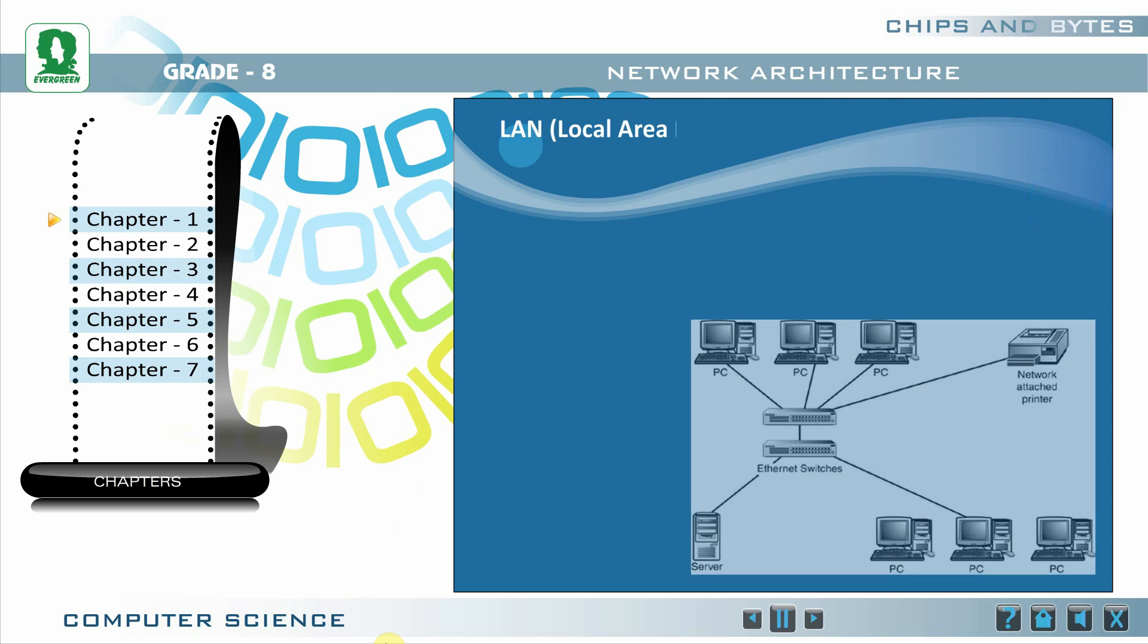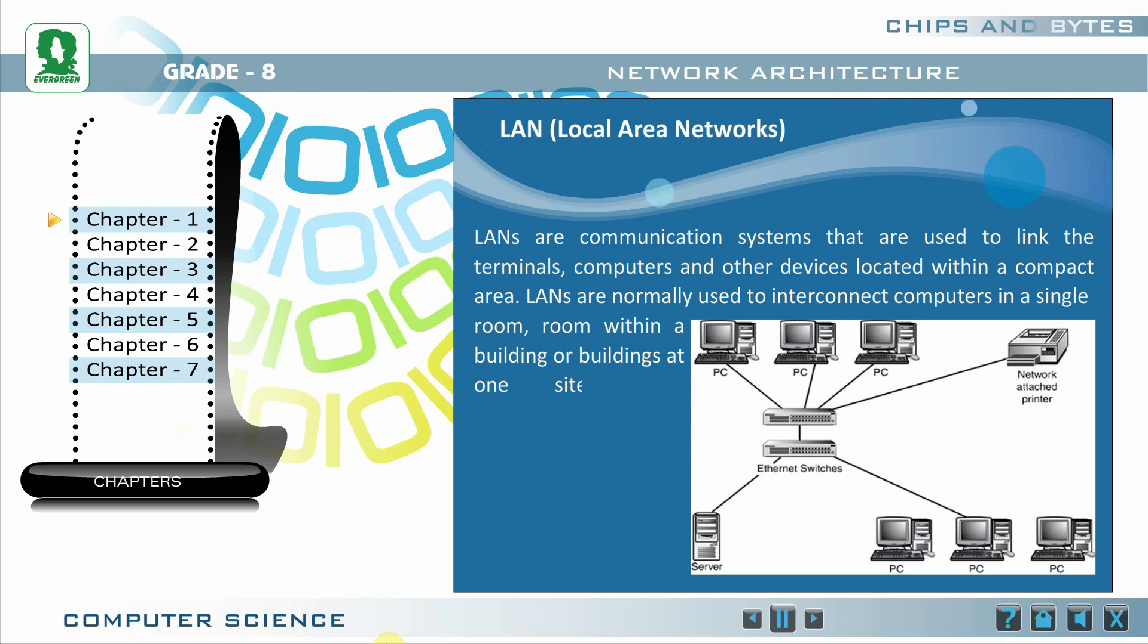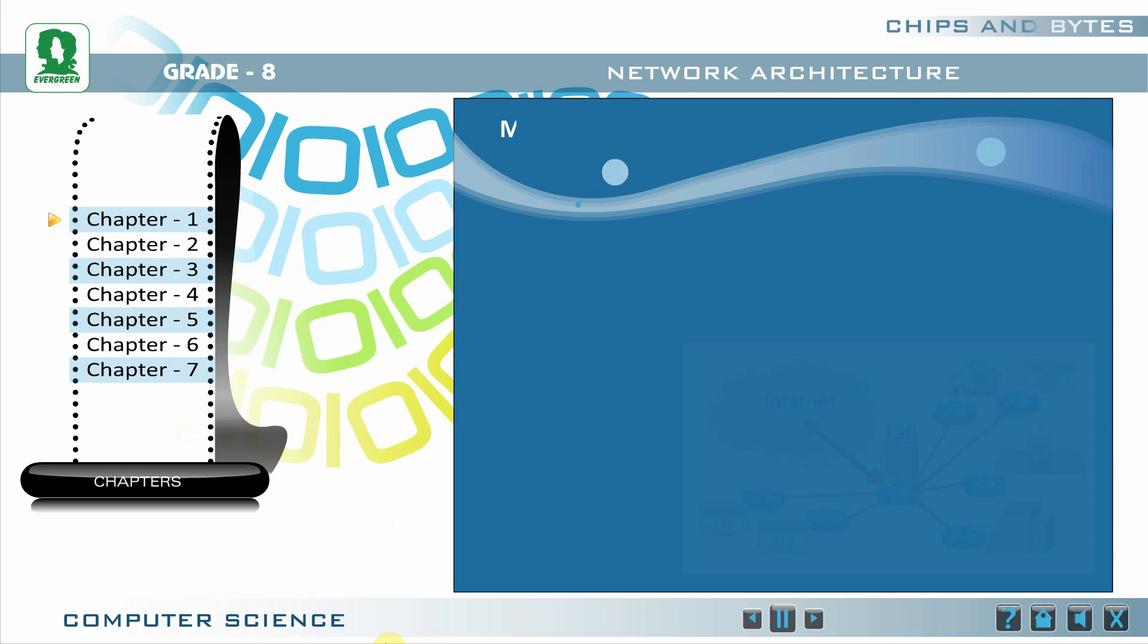LAN (Local Area Networks): LANs are communication systems that are used to link the terminals, computers, and other devices located within a compact area. LANs are normally used to interconnect computers in a single room, room within a building, or buildings at one site. LANs transmit data in digital form using media such as coaxial cable or multi-stranded cable.